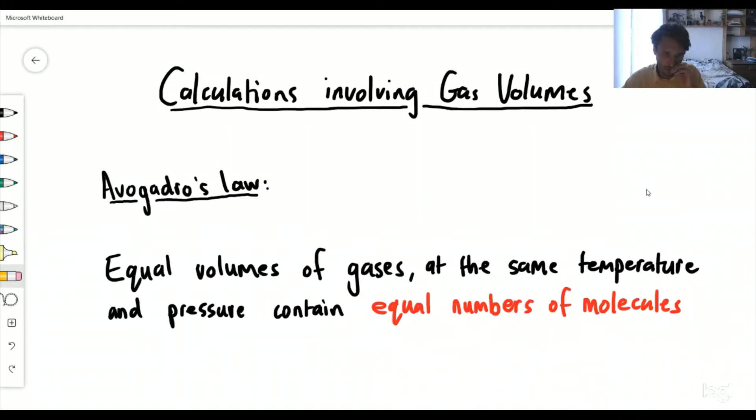Welcome to this video on calculations involving gas volumes. Let's get straight into it. So we've got Avogadro's law here. He's a scientist that worked with lots of different molecules and gases, and what he discovered is that equal volumes of gases at the same temperature and pressure contain equal numbers of molecules.